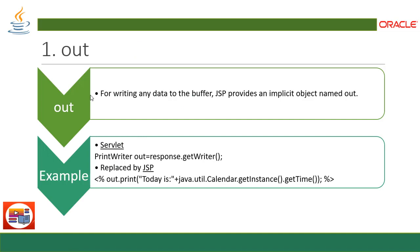The `out` implicit object is for writing any data to a buffer. It provides an implicit object named `out`. In a servlet we used to write `PrintWriter out = response.getWriter()` to print values. Now in JSP it is replaced by the scriptlet tag with `out.print()` to print the message.